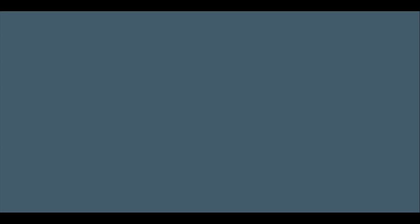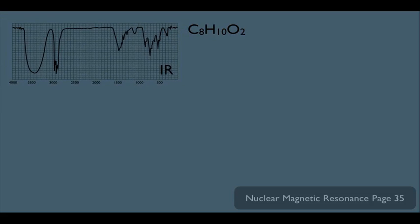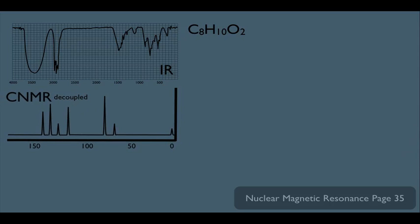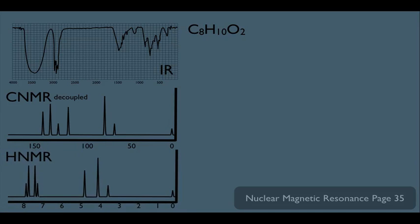Let's look at sample problem one. We find some unknown substance and first stick it into the mass spec machine, and this is what we get for the molecular formula. We would also take our sample and run it through the IR machine, and let's say we get this IR spectra. We could also run our sample through the NMR and get both a CNMR spectra and an HNMR spectra.